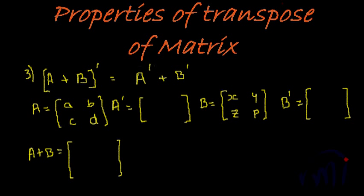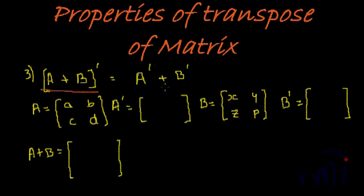The third property states that if we transpose the sum of two matrices, the result will be the sum of the transposes of the individual matrices. So if we transpose a sum, we get the sum of the transposes of the original matrices. What it means is you can either add them and then transpose, or transpose them first and then add — both times you will get the same answer.